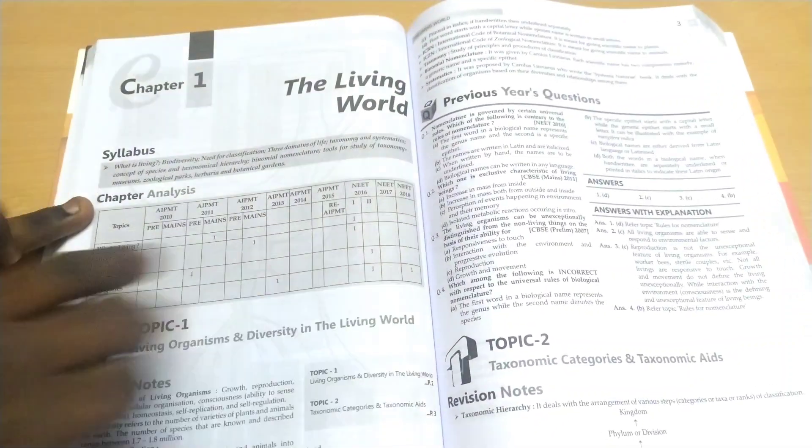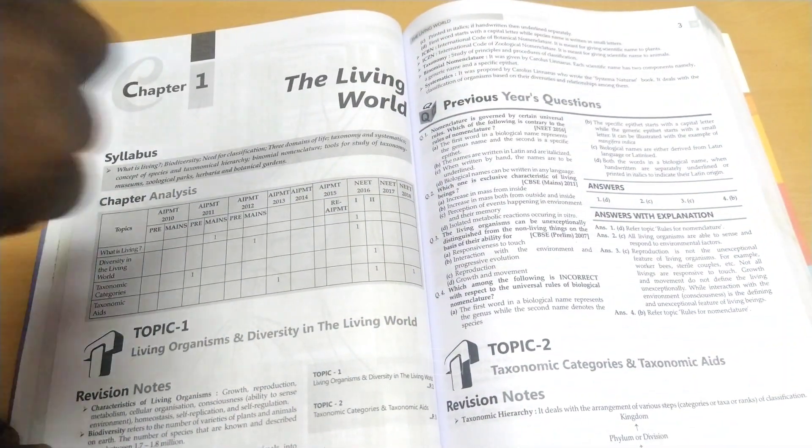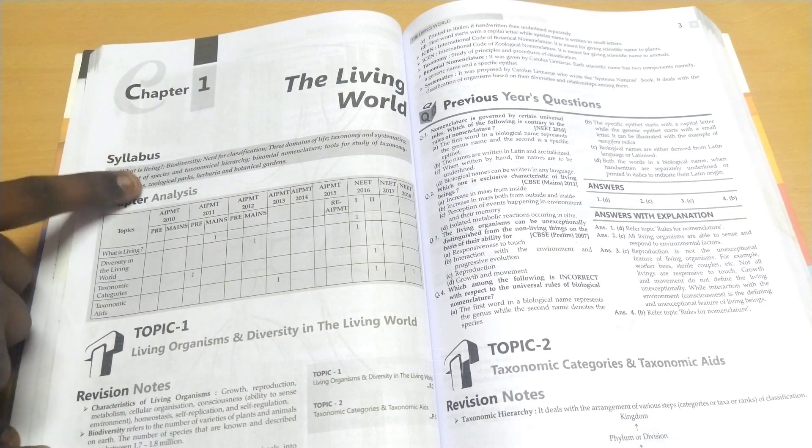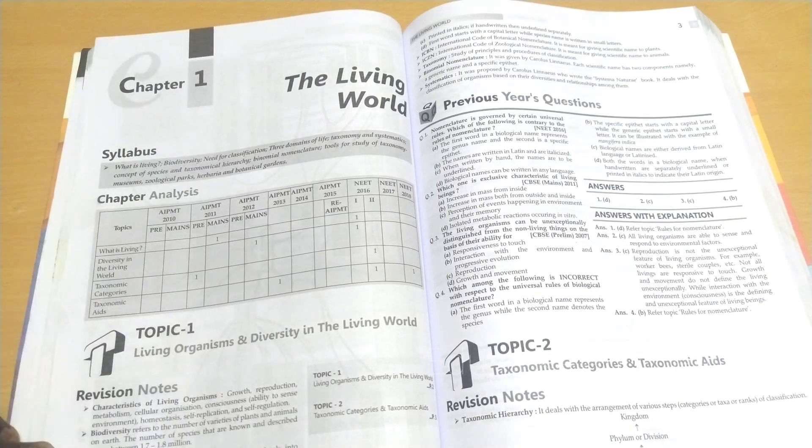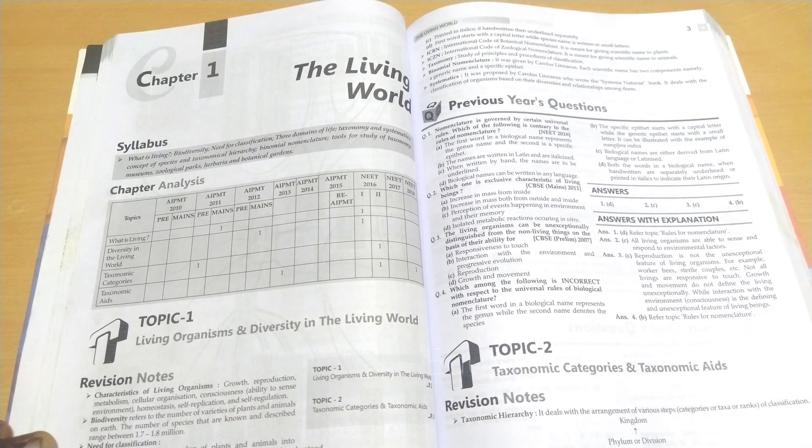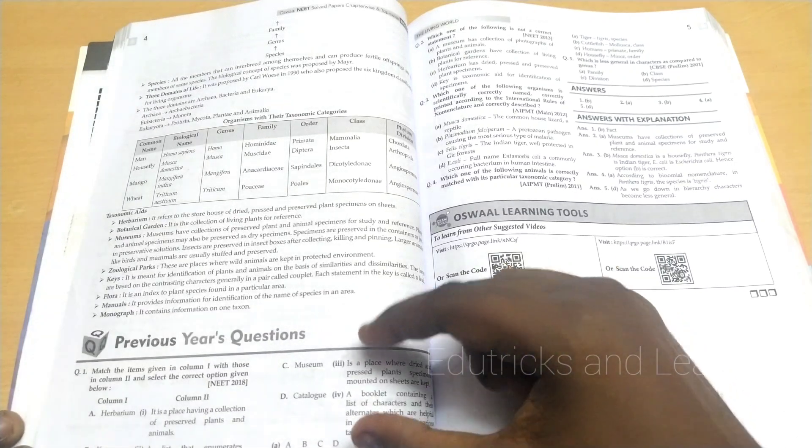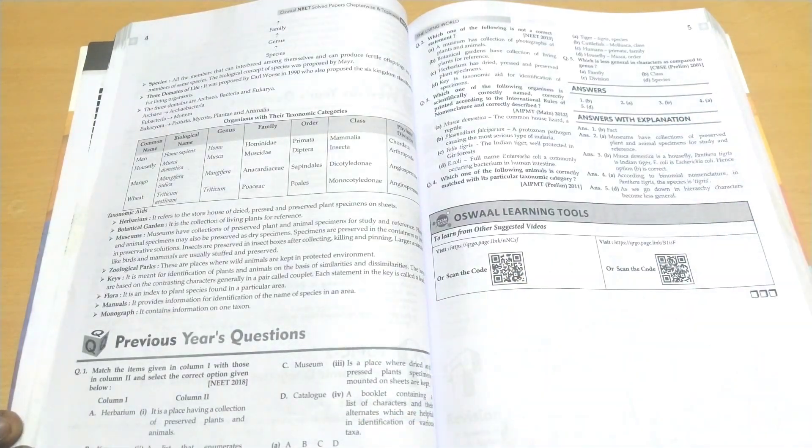In Chapter 1, Living Biology, they've given the syllabus, complete chapter analysis, and Topic 1 with topic-wise questions, topic-wise revision notes, and topic-wise previous questions. This is a unique property of Oswaal books: they've given topic-wise previous equations. For Topic 2, they've also given previous equations.